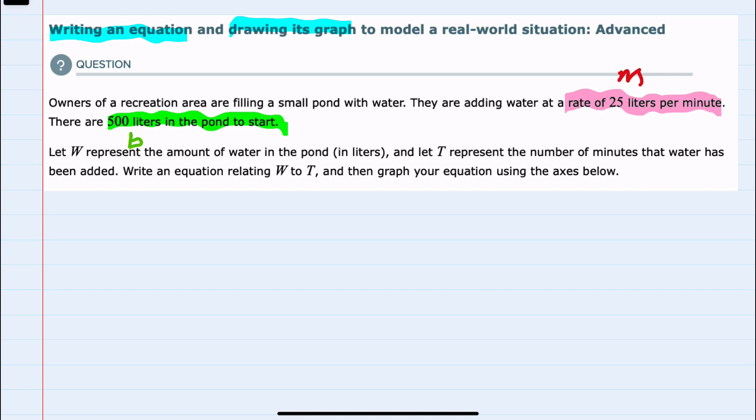And we're told to let W represent the amount of water in the pond in liters and T represent the number of minutes that the water has been added. Write the equation relating W to T.